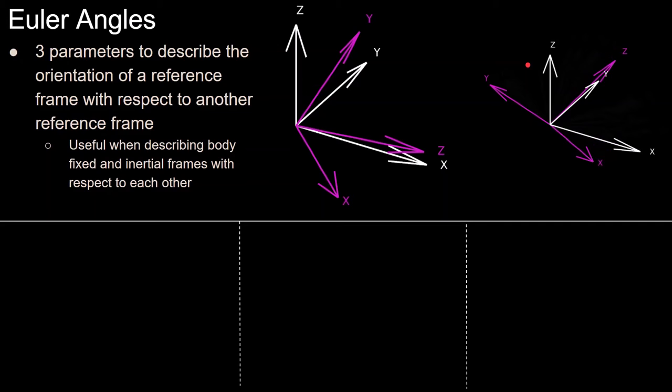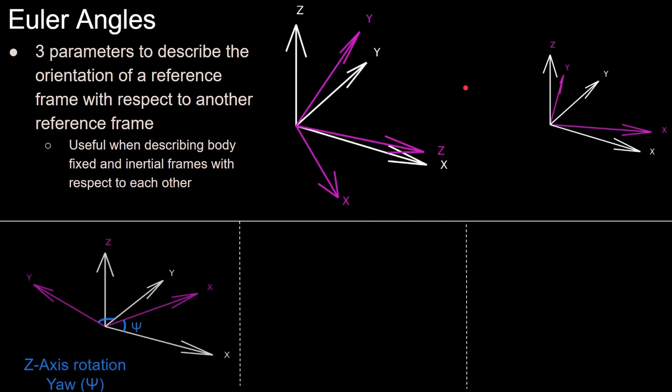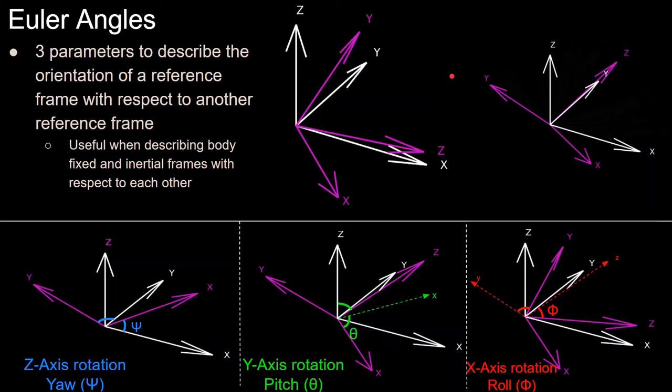It may not be immediately obvious why using Euler angles are intuitive or useful. Why do we do these three separate rotations—a yaw rotation, a pitch rotation, and a roll rotation—in order to describe these two reference frames when we could just do one rotation about some arbitrary axis? This is definitely possible by using a rotation axis and an angle about that axis or using quaternions. But this is actually less intuitive because it's easier for us to visualize three angles about three known axes versus three numbers that describe some arbitrary axis and one angle about that axis.